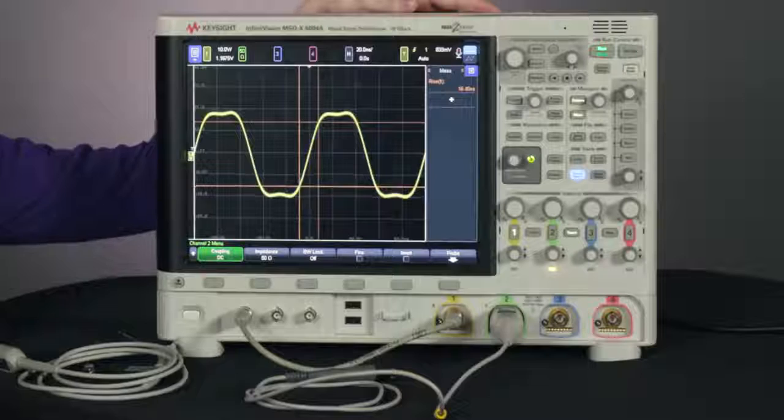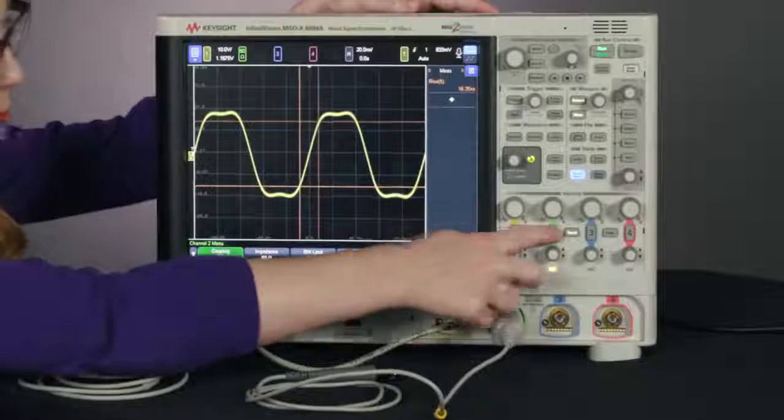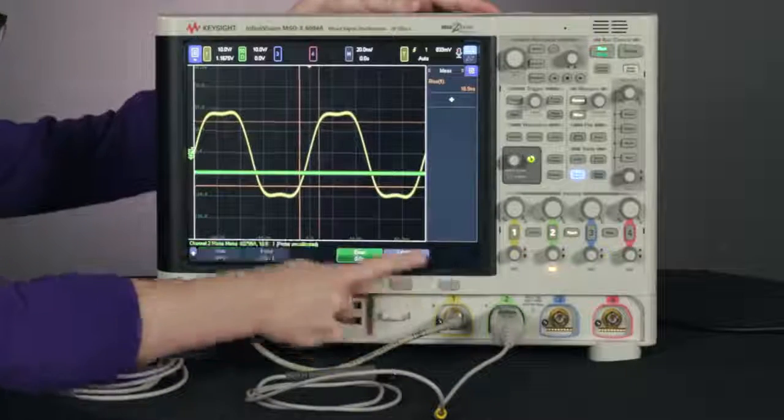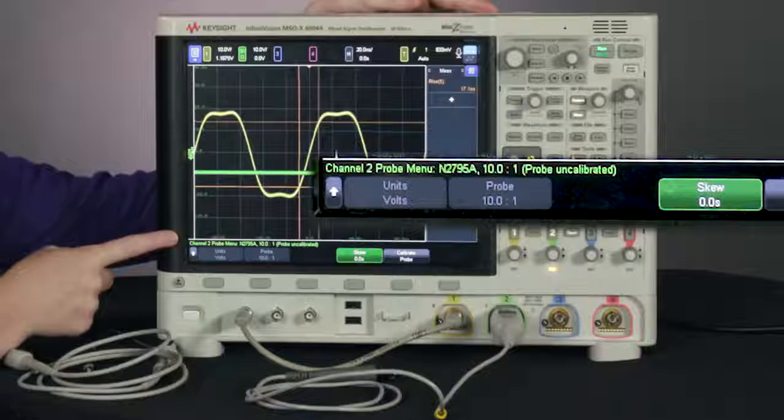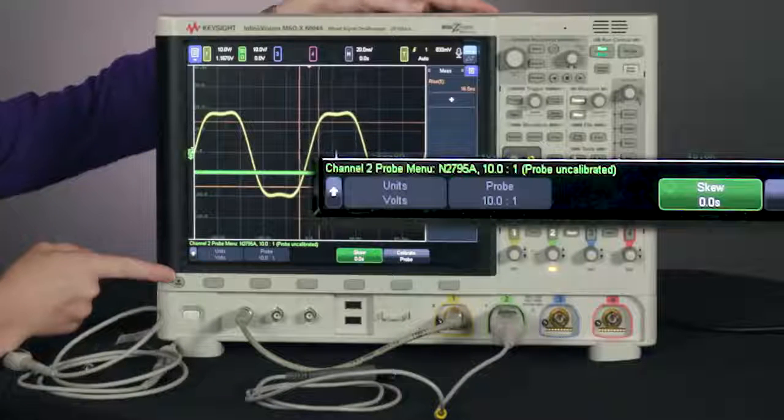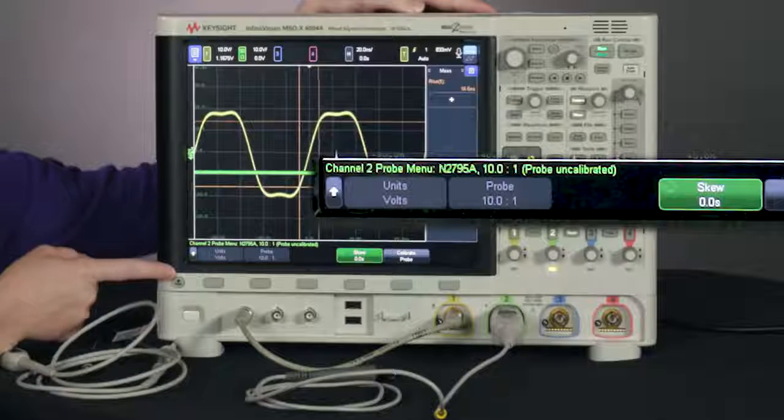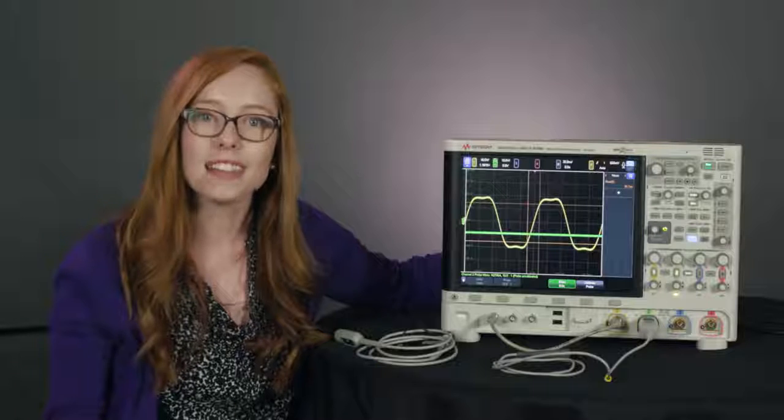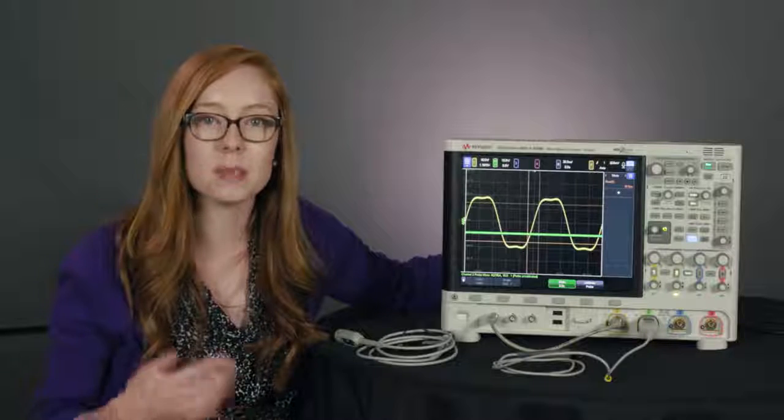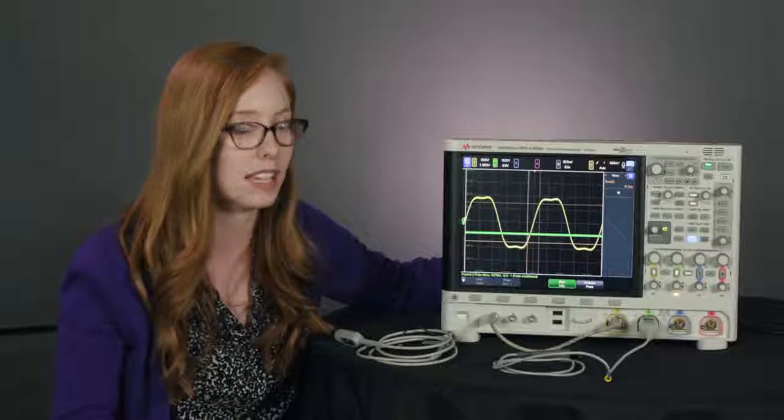And you can see this auto sensing capability when you plug in the active probe, turn on channel two and hit probe. You'll see the type of probe listed here with the attenuation factor and it's automatically detected the units in which the probe is measuring. And depending on the type of active probe there might be some other auto configuration that's done on the part of the oscilloscope as soon as the active probe is plugged in.